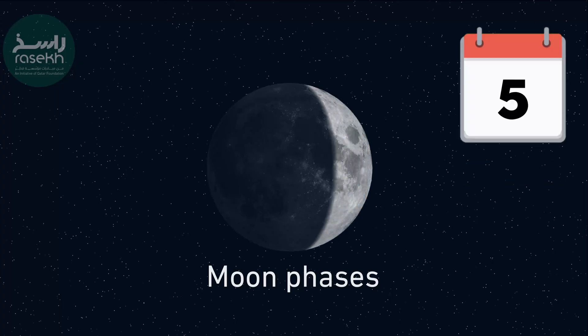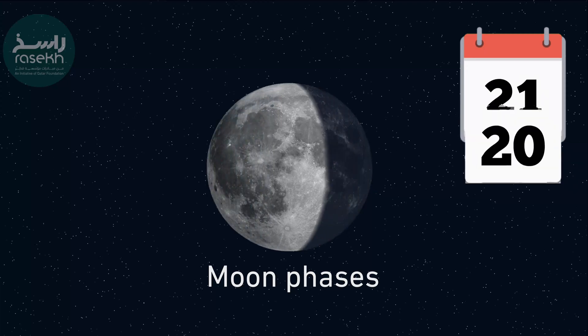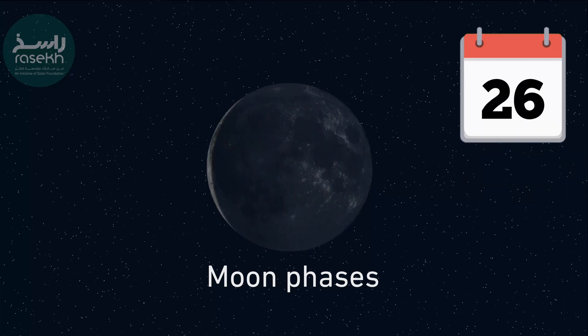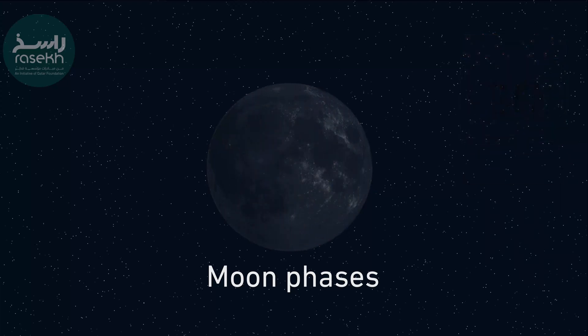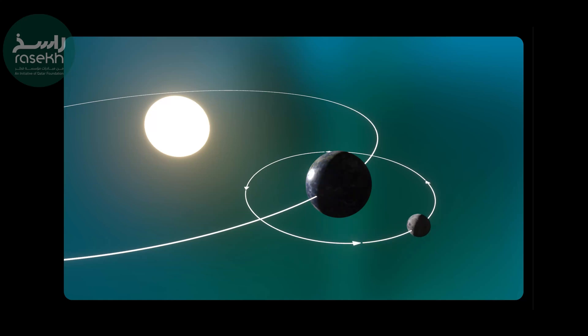The moon goes through a cyclical pattern of phases that we observe from Earth over approximately one month. These phases are caused by the moon's orbit around the Earth and how the sun's light illuminates the part of the moon that is facing the Earth.